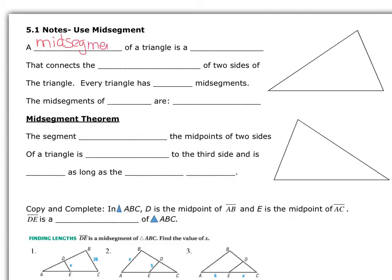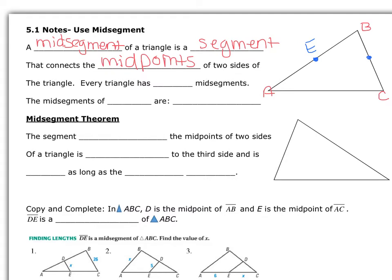A mid-segment of a triangle is a segment that connects the midpoints of two sides of the triangle. We have triangle ABC, and along each side of the triangle are midpoints. Of side AB, that would be midpoint E. Side BC, we would call that D. And of side AC, let's call this point F.